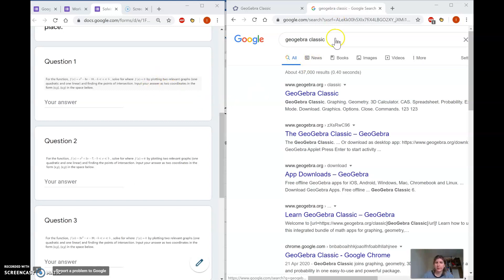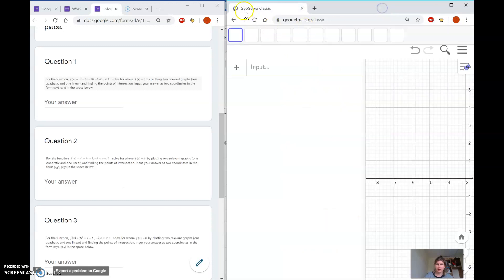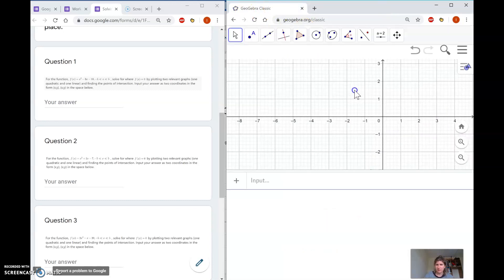First, we're going to Google GeoGebra Classic. You don't want the graphing calculator for this one, we want the classic version. Click on that, and I've already got it up here.